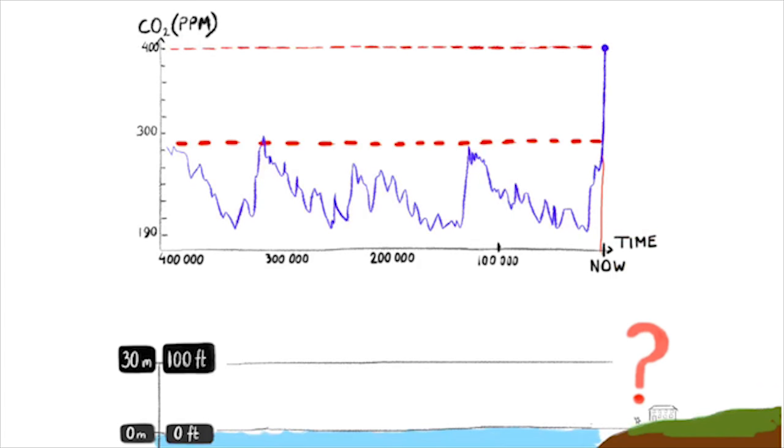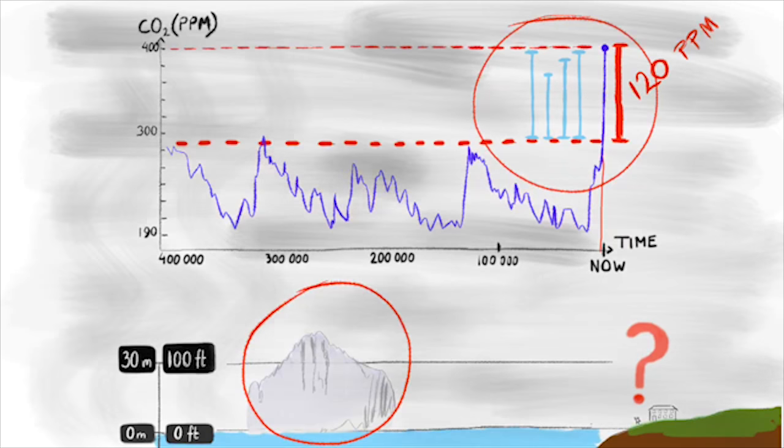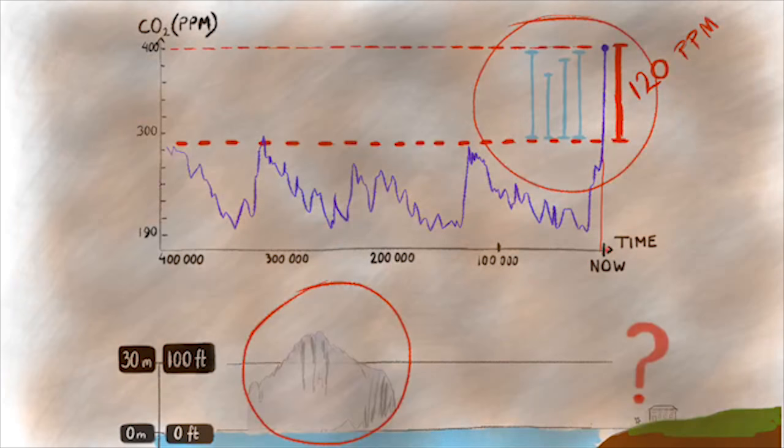Take into account the following facts: one, the current increase of 120 parts per million is larger than any of the latest increases and they all melted ice ages. Two, there is plenty of ice left on the earth that is currently melting. Why should we expect any less from our own increase of greenhouse gas emissions? We are at the beginning of a tragedy that will unfold during the next two to three hundred years and it has already started.